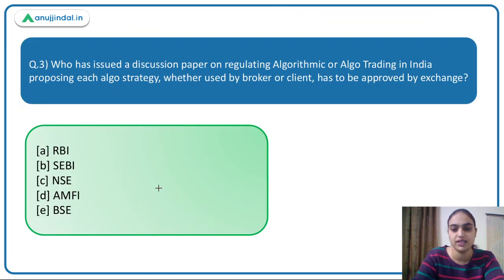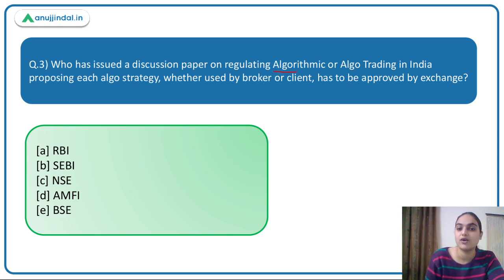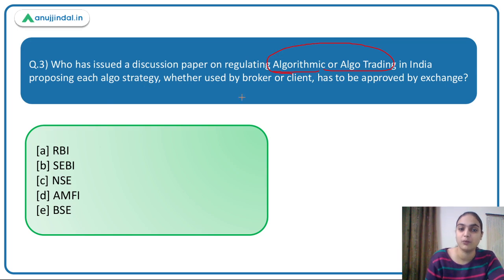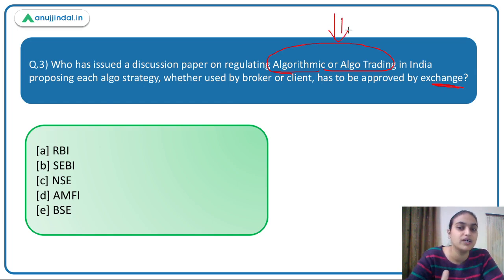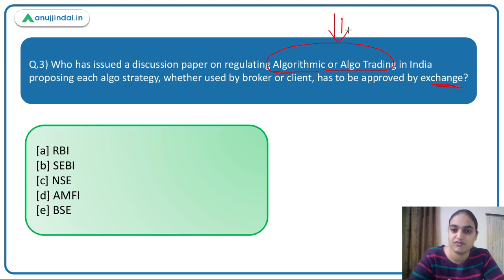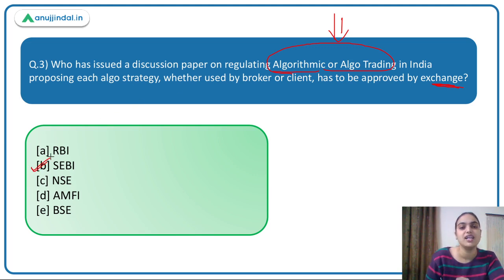The third question asks: who has issued a discussion paper on regulating algorithmic or algo trading in India, proposing that each algo strategy — whether used by broker or client — be approved by the exchange? Since the question involves trading and stock exchanges, this points to the regulatory body SEBI. The answer is option B — SEBI.